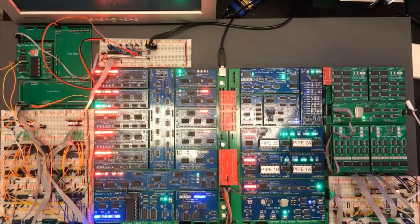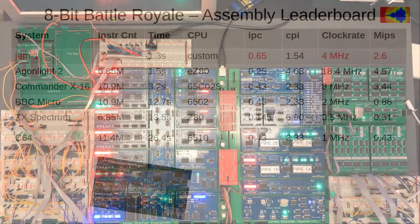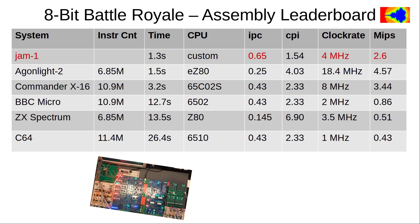But buckle up — here comes another interesting contender: James Sharman's custom pipeline CPU, Jam 1. James has documented his build in over 100 YouTube videos; the link is in the description. Jam 1 finishes first place after only 1.3 seconds. James has also measured the number of instructions per clock specifically for his Mandelbrot code — a whopping 0.65 instructions per clock. It's not only the fastest CPU but also the most efficient on today's leaderboard. If we multiply the 1.3 second runtime by its MIPS, we see that Jam 1 only needs 3.38 million instructions to complete the whole benchmark — only about a third of Matt's original C64 code. The Jam 1 pipeline is not only highly efficient, but its instruction set, in combination with James' skill, supports a significant optimization of the code.